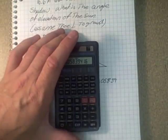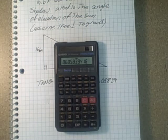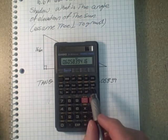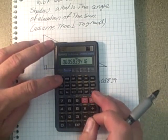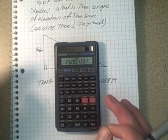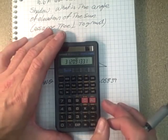Okay, now once you have a decimal number, you have to do second function tangent. So that would be this button to convert it back into an angle. Make sure your calculator is in degrees. Second function, tangent. And that would be 31.2 degrees.